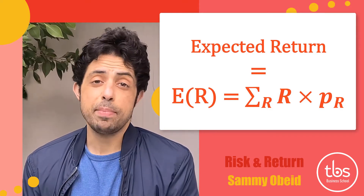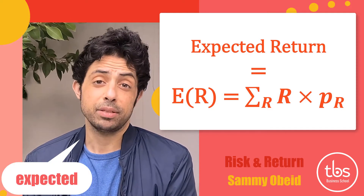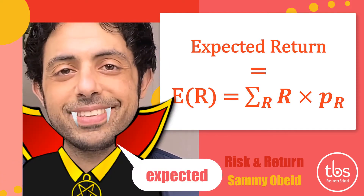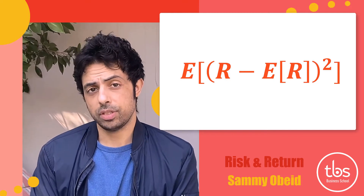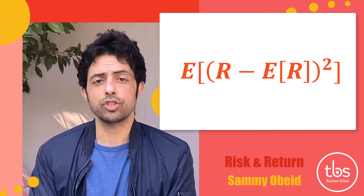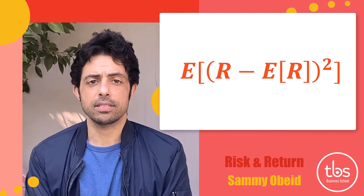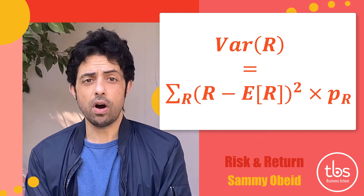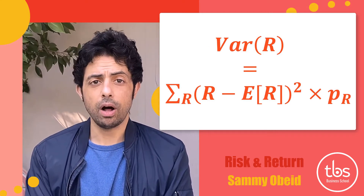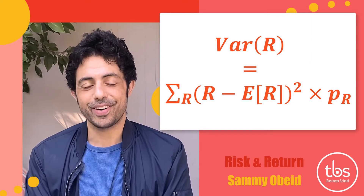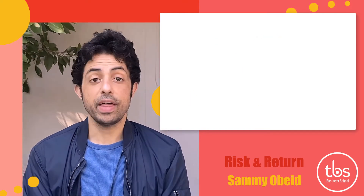Now, a lot of people get anxiety when they see the equation for expected return, but that's expected. Then there's the variance of a return, which is the expected squared deviation from the mean, calculated as Var(R) is equal to the sum of all (R minus E of R) squared times the probability of R.